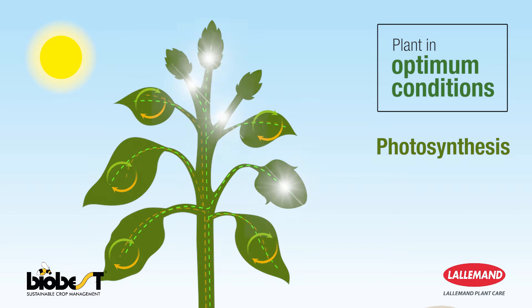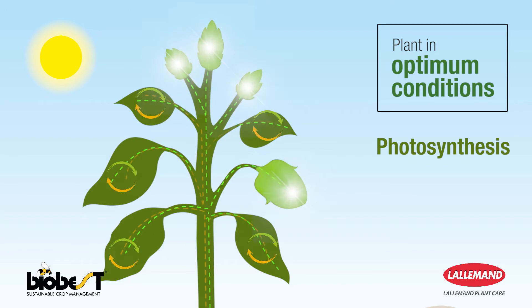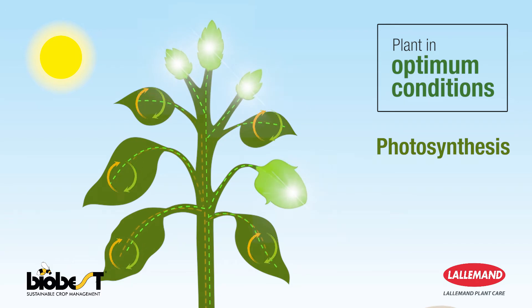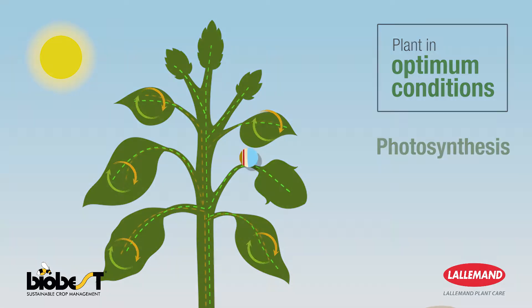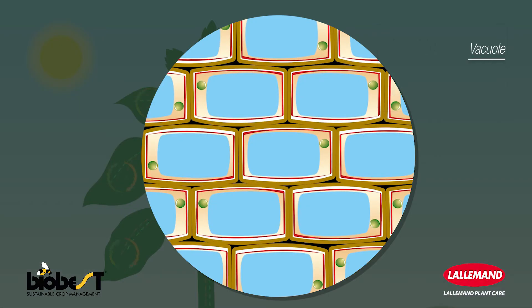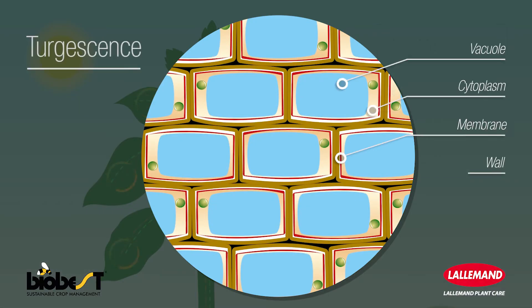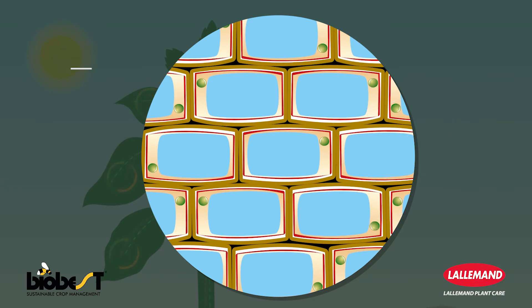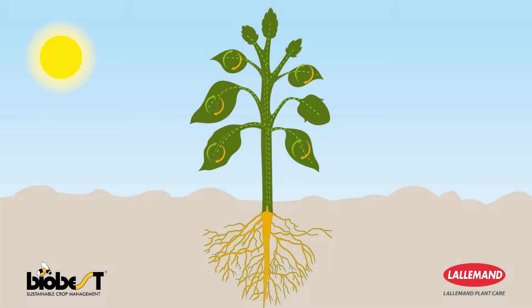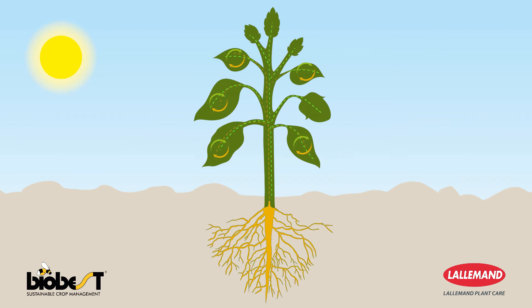These sugars are then transported by the elaborated sap to the growth sites: the fruits, the leaves, and the roots. The plant cells are turgid and functioning normally, and the plant has an upright habit.